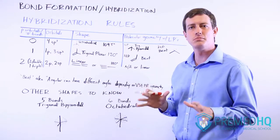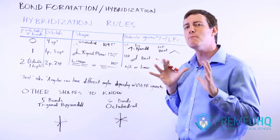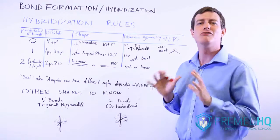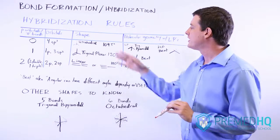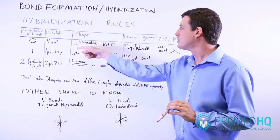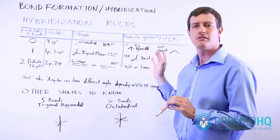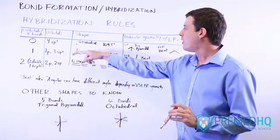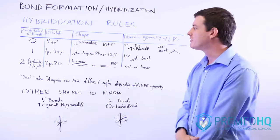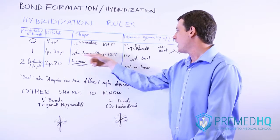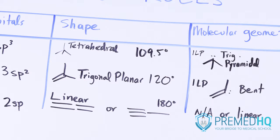Now tetrahedral and trigonal planar geometries are the ones you should be most familiar with because you're very likely to encounter those. The tetrahedron is single bonds in a four bond arrangement and that has a 109.5 degree bond angle that you should be aware of, and trigonal planar has a 120 degree bond angle.